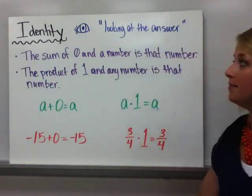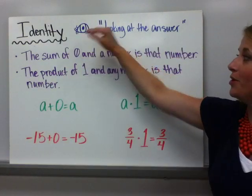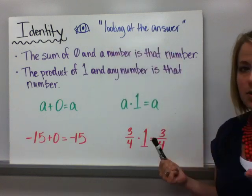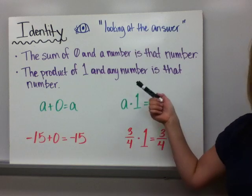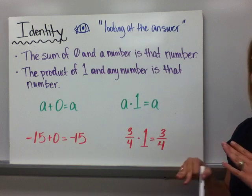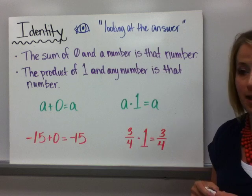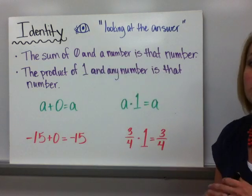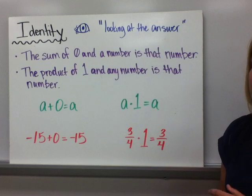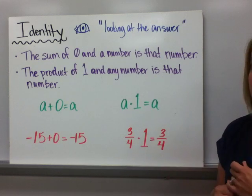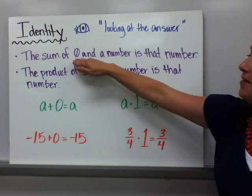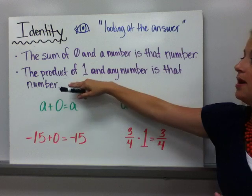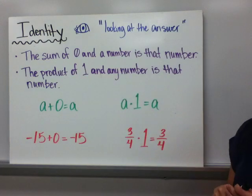The identity property. Got you a little pretty eye right there. The idea of this is that you're looking at the answer. It doesn't really require a lot of thought. This is one that you know and you've used for a long time. It's why in multiplying, you didn't spend a lot of time learning your ones tables. Or when you were learning addition, you didn't spend a lot of time finding what 0 plus something was. Because the sum of 0 and a number is that number. Or the product, when you're multiplying, the product of 1 in any number is that number.